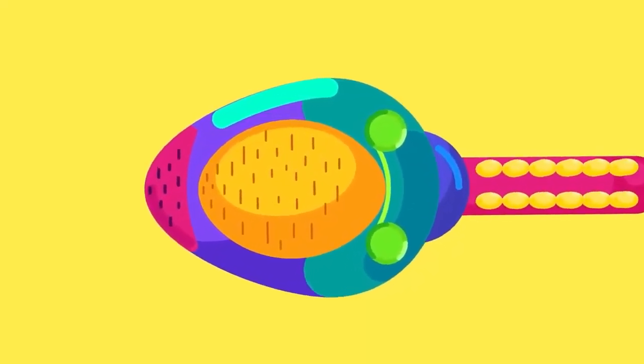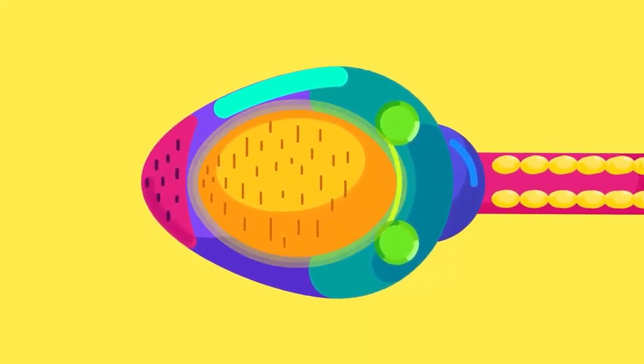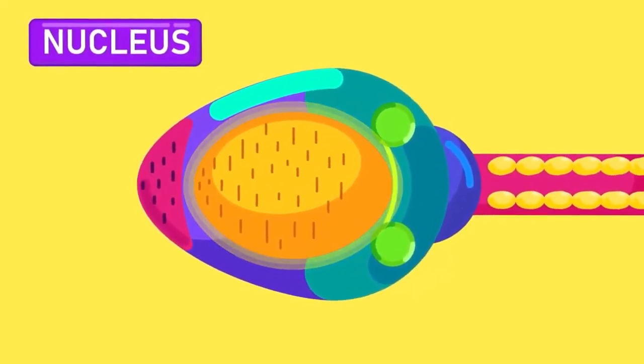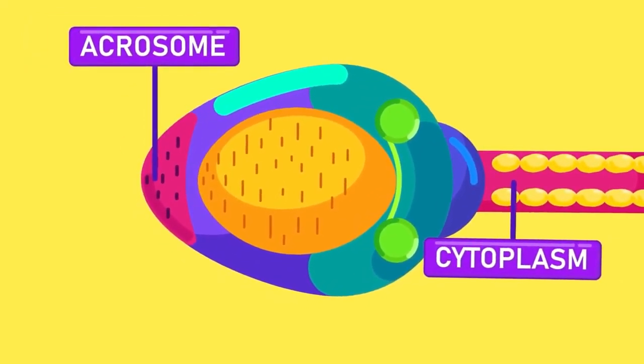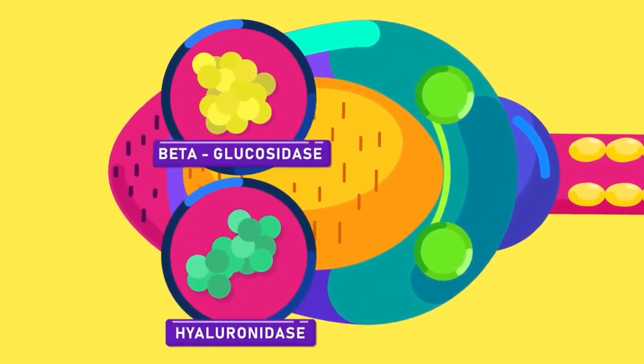Coming to the composition of the sperm head, it contains a large nucleus that carries a haploid set of chromosomes, little cytoplasm, and an acrosome. The acrosome is a sac containing enzymes.